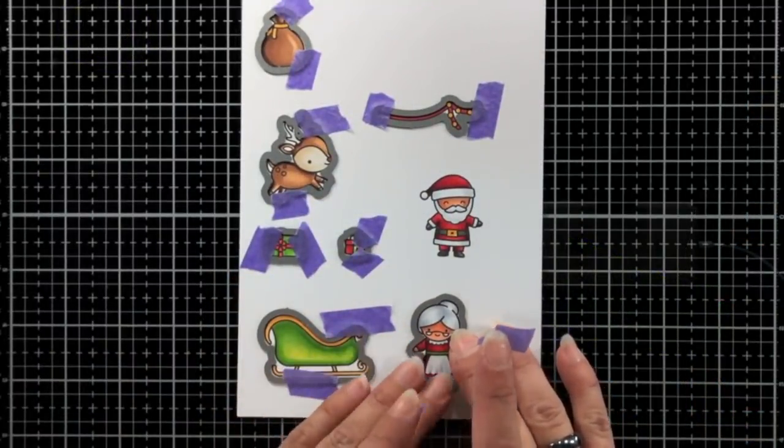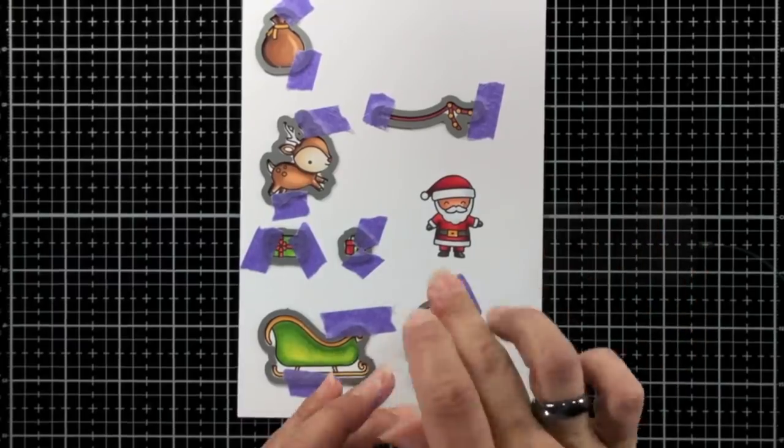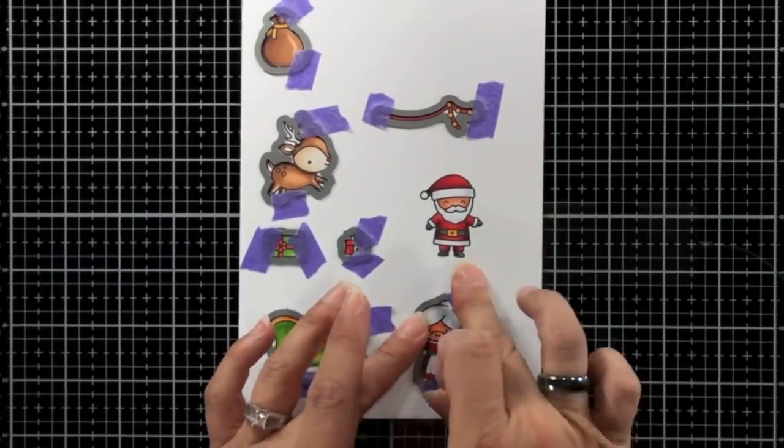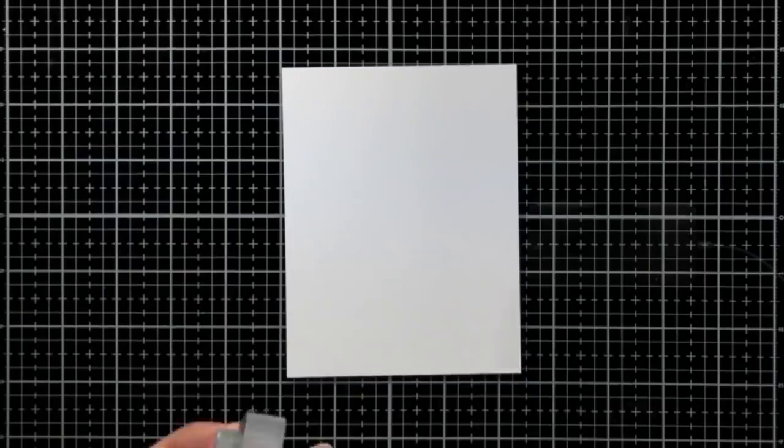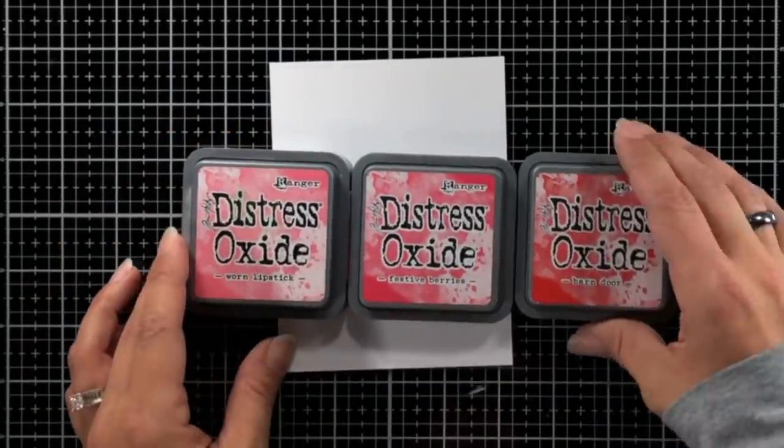Then just taking the coordinating dies, lining them up with my original panel where I colored the images, hold them down with some purple tape, and run that through the die cut machine.